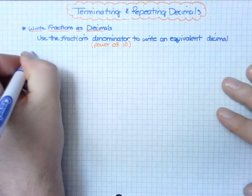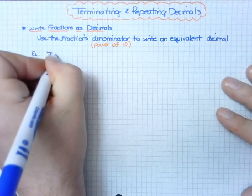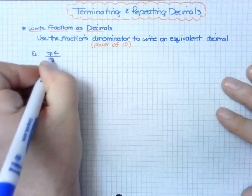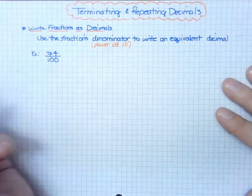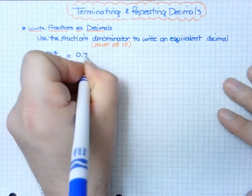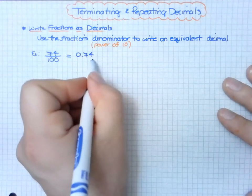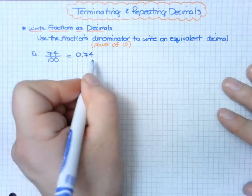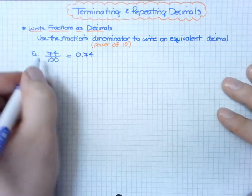Some examples. Start with one that's easy, a review from last year. Let's say we have 74/100. This is telling me there are 74 one-hundredths, so we can write that as a decimal, 0.74, making sure it lands in the hundredths place. This is already a power of ten: 10, 100, 1000, and so on.